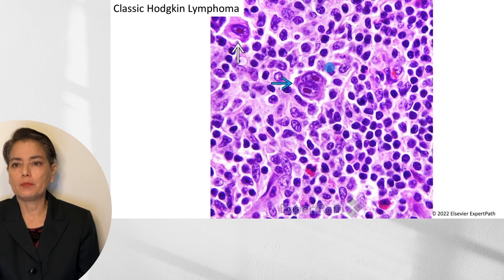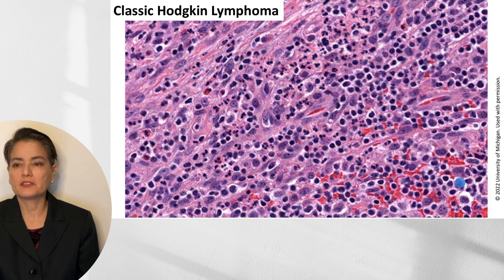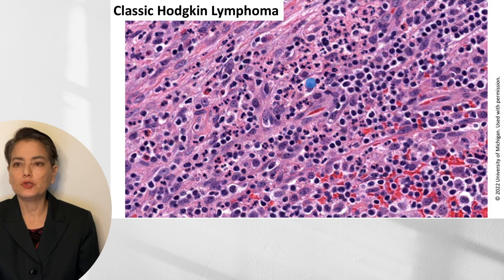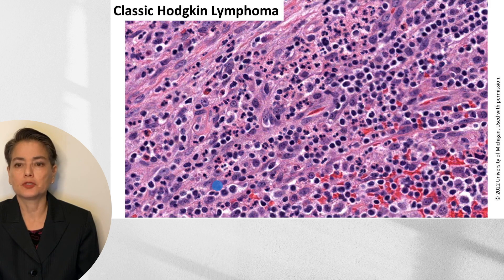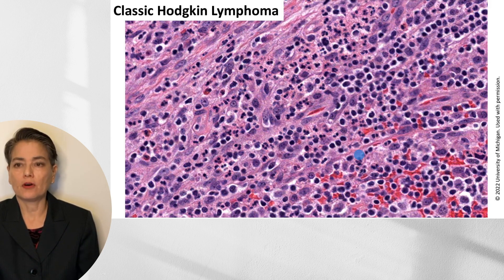Here's another image showing a Reed-Sternberg cell and a mononuclear variant, with eosinophils and mixed lymphocytes in the background. In a different field from the same tumor — without Reed-Sternberg cells — you can appreciate eosinophils and neutrophils percolating through the tissue. You can see why you might initially think this represents an infectious reaction: neutrophils suggest bacteria, eosinophils suggest parasites, and plasma cells and macrophages are present. You have to be aware of the possibility of a neoplasm, or you will interpret this as purely an inflammatory response.